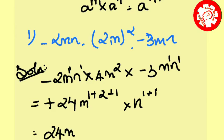24m power 4, n square. So simple. Now I already told you that multiplication of monomials is very important, so we will practice the same. Polynomials are easy to multiply because it is one procedure. Second sum.